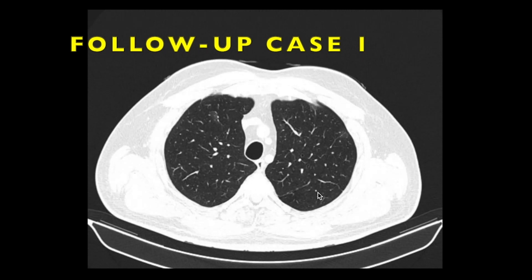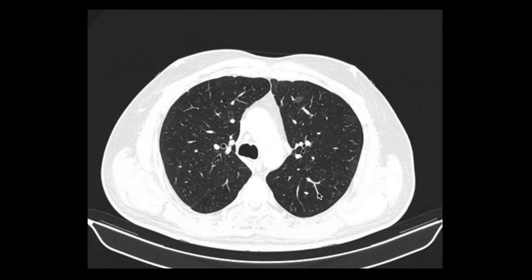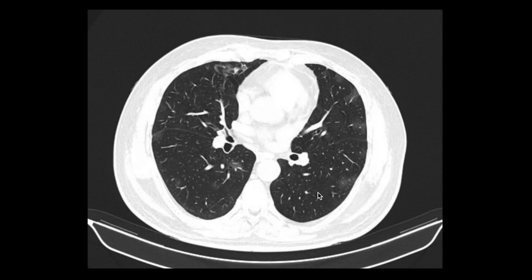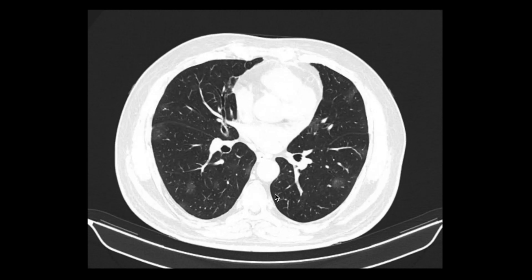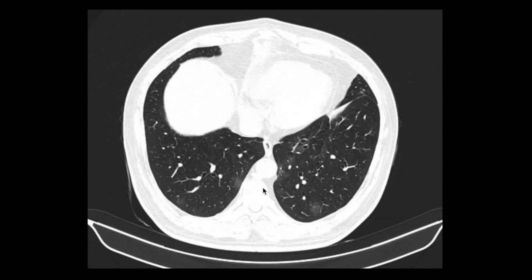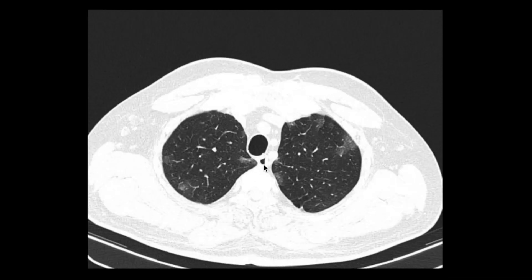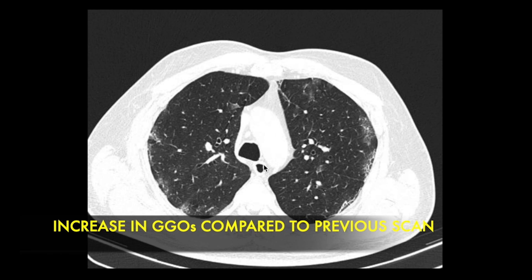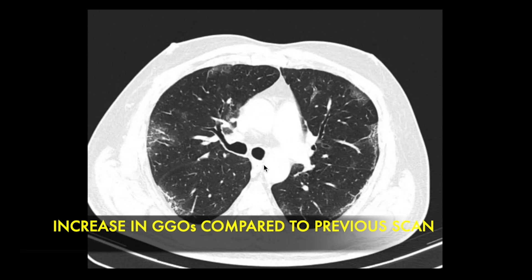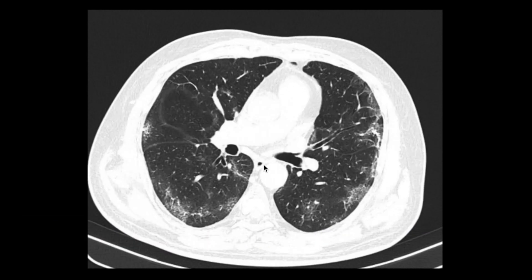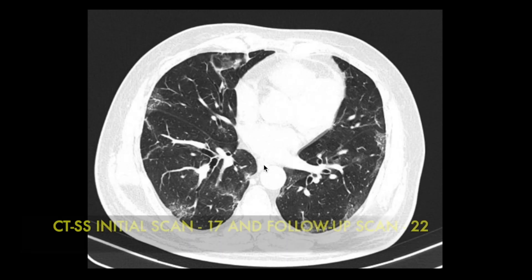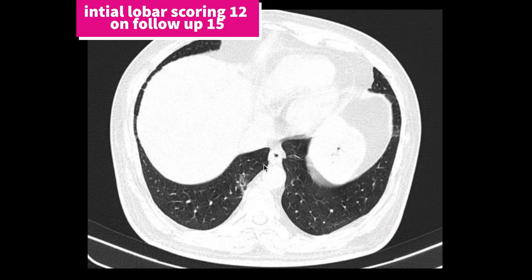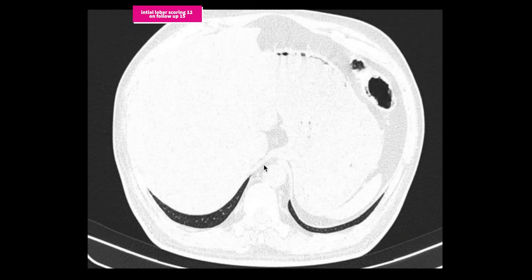This RT-PCR proven case of COVID-19 presented with breathlessness, fever, and sore throat. HRCT demonstrates multiple peripherally arranged ground glass opacities in both lungs. A follow-up HRCT taken after 5 days clearly shows an increase in ground glass opacities and crazy paving pattern. The CT severity score increased from 17 to 22, indicating worsening of the disease.